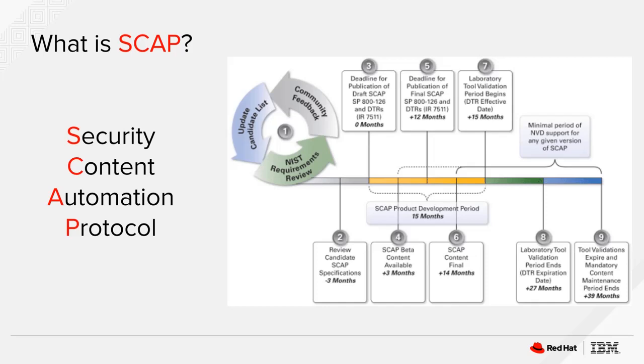Several years back, the U.S. government realized that the security hardening of computer systems had to be a top priority, and they decided to create a standardized checklist that any government computer would follow when hardening the system against external threats and attacks. This standardized checklist became known as SCAP, which stands for Security Content Automation Protocol. It's this protocol that is used when standardized compliance checking is applied to any enterprise-level Linux infrastructure. This line of specifications for maintaining system security for enterprise systems is maintained by the National Institute of Standards and Technology, otherwise known as NIST.